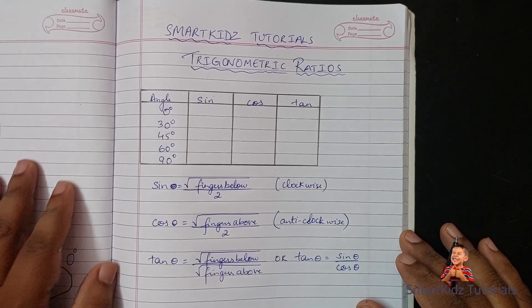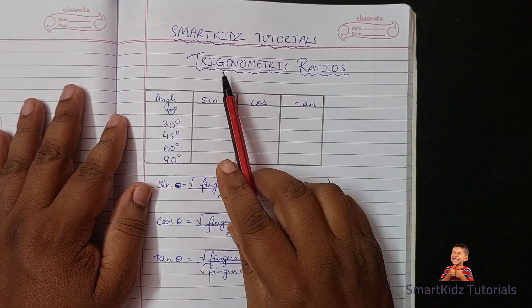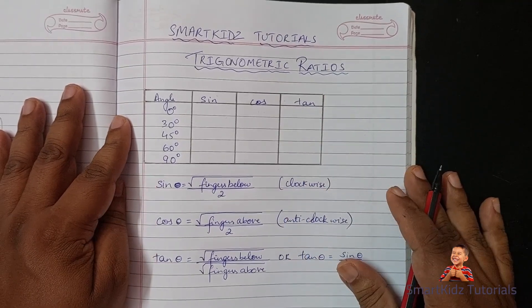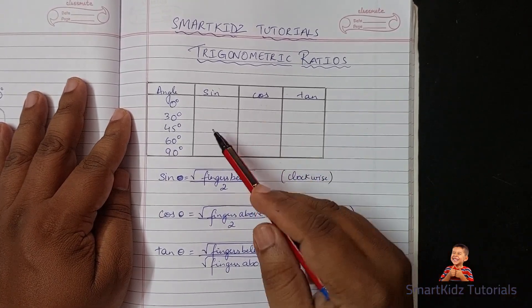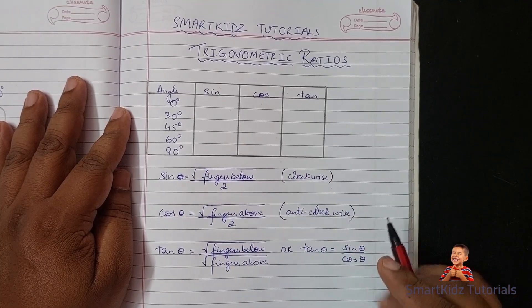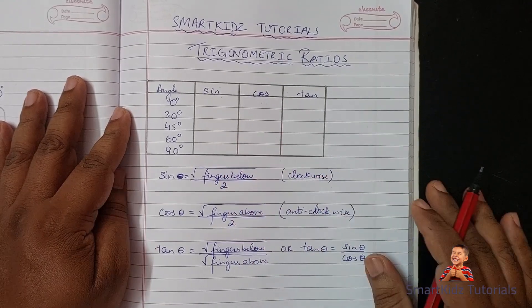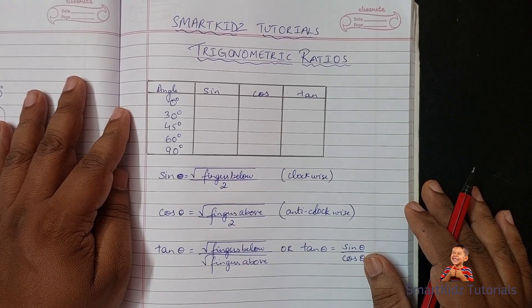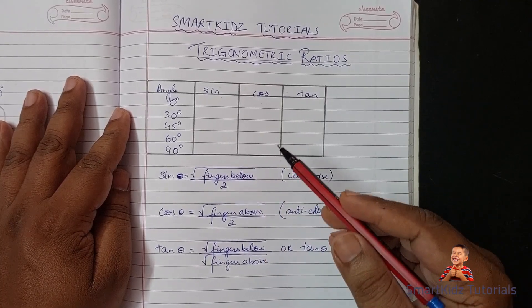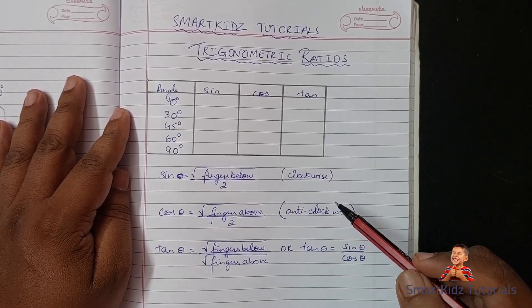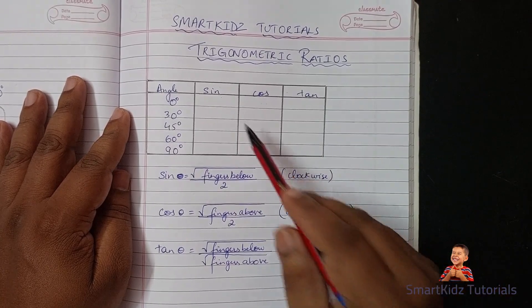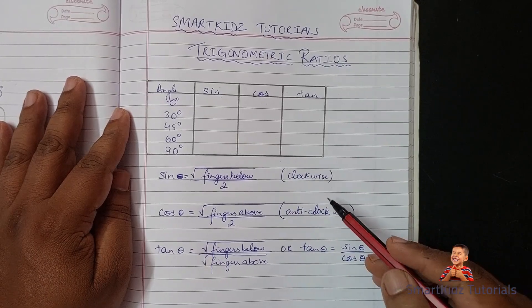Hello students and welcome to Smart Kids Tutorials. In this video we will be learning how to remember trigonometric ratios in a very easy and simple manner. You don't have to memorize them — you can easily find the values of the various trigonometric ratios of different angles on your hand. This video is applicable for class 9 as well as for SSC students. SSC students will have additional trigonometric ratios like cot, cosec, and sec.